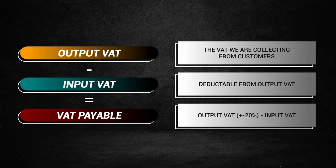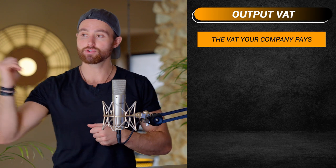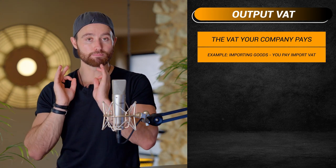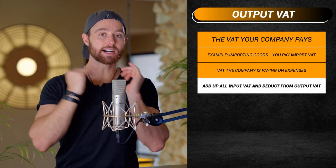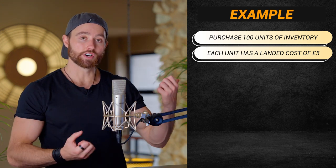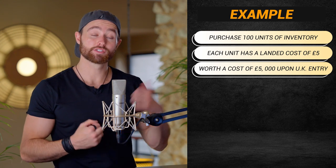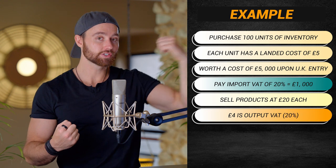Let me explain: output VAT is what we've discussed — you collect 20% of the sale price from your customer and remit that. But any VAT your company pays during the same quarter — for example, if you import inventory into the UK, you're going to pay import VAT. This is VAT the company pays on its expenses. You can add up all of that input VAT and it is deductible from your output VAT bill. For example: you purchase 1,000 units of inventory, each costing £5 to manufacture and ship to the UK — worth £5,000 when it enters. You pay import VAT at 20%, which amounts to £1,000 of input VAT.